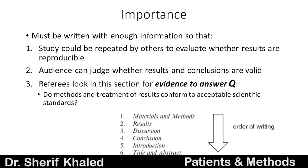The methods section must be written with enough information to achieve three goals. First, so that the study could be repeated by colleagues to evaluate whether the results are reproducible or not. Second, the audience can judge if the results and conclusions are valid when they read the technique used. Third, referees will look into this section for evidence of how you answered the research question. For example, some people reported that in AVN of the femoral head they used vascularized fibular graft, and 100% of patients were revascularized and did not require total hip replacement. Unfortunately, this was not reproducible — it only worked in the hands of the surgeon who did the study.